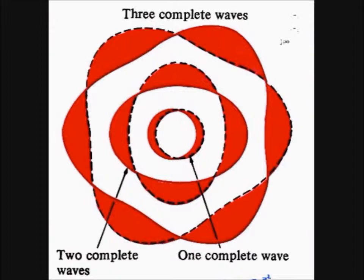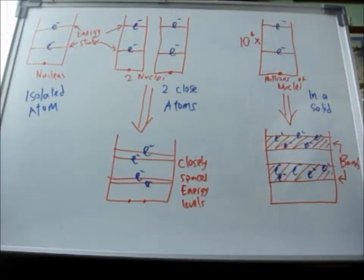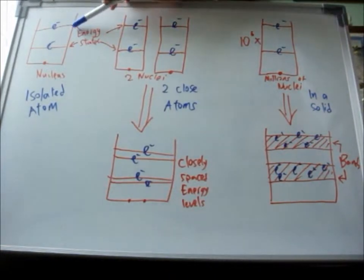The de Broglie theory of electrons hence shows that electrons must occupy specific energy states or energy levels. Any other orbits would result in destructive standing wave interference, and hence orbital decomposition. So, in individual atoms, electrons occupy energy levels that can be represented as such.